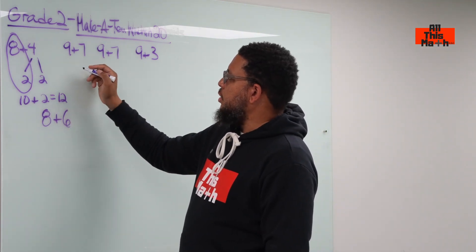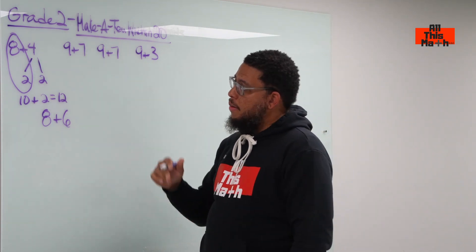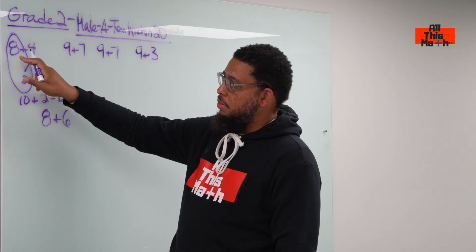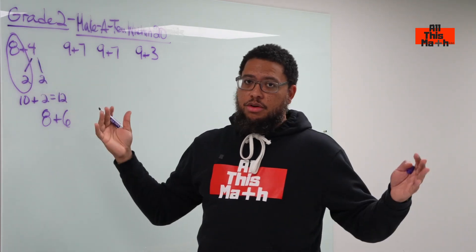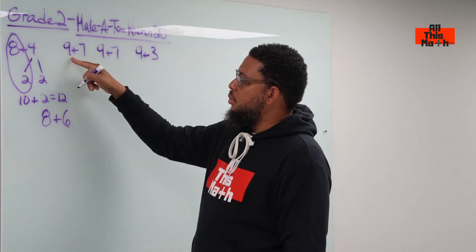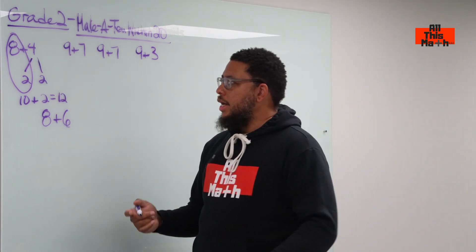Alright, we'll do the same thing with 9 plus 7, and notice how I wrote 9 plus 7 twice because we're going to do it two different ways because we actually have options. You can make the 8 into a 10 or you can make the 4 into the 10. You can make either number into a 10. It's up to you. So, 9 plus 7. Let's first make the 9 into a 10 because that kind of makes sense because 9 is closer to 10.